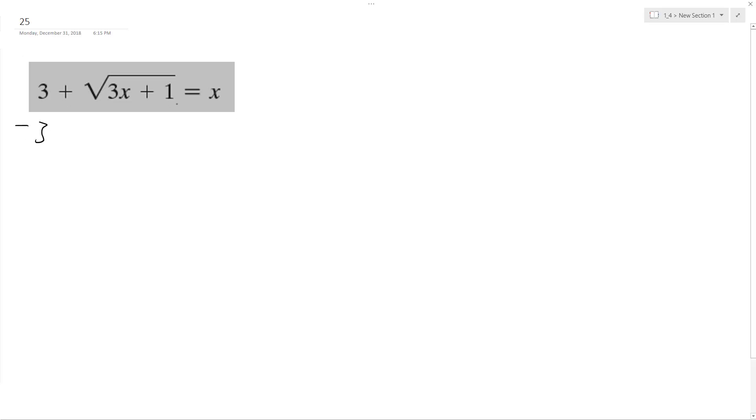So, let's get the square root by itself. We end up with the square root of 3x plus 1 is equal to x minus 3.